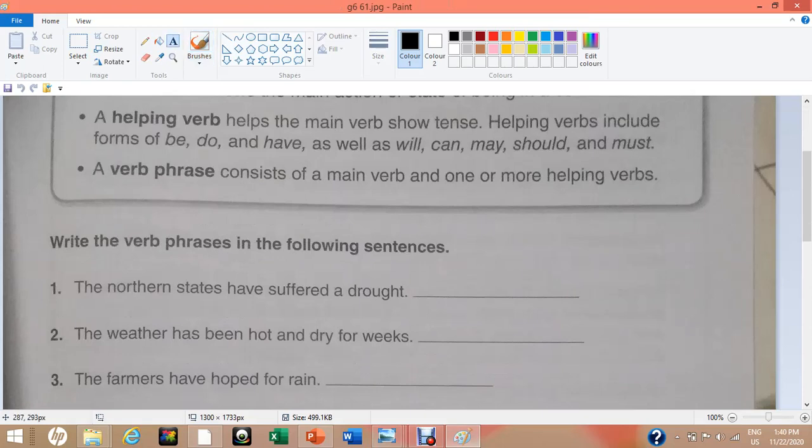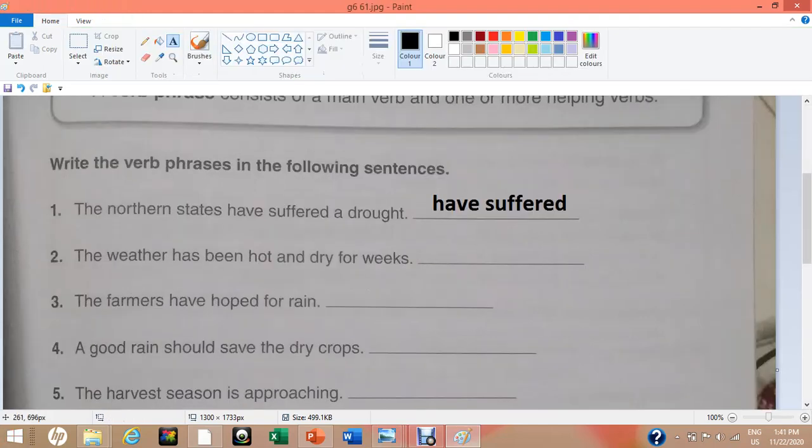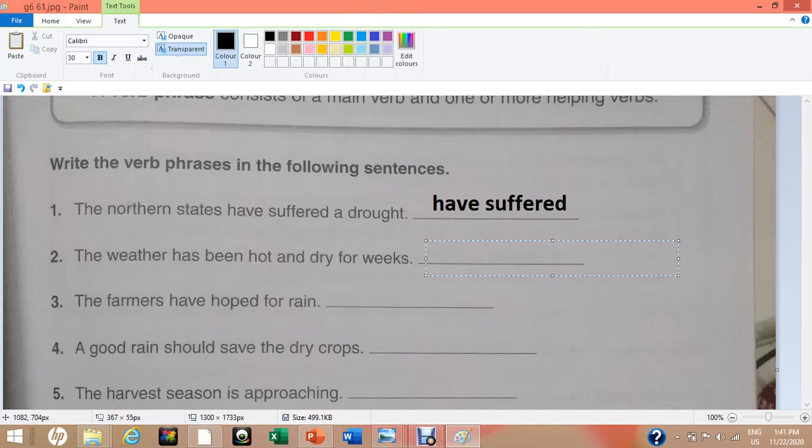Number 1. The Northern states have suffered a drought. In this sentence, the verb phrase is have suffered. Number 2. The weather has been hot and dry for weeks and here the verb phrase is has been.